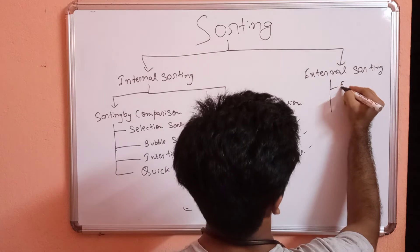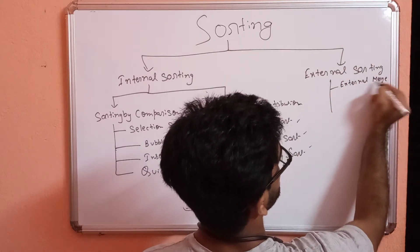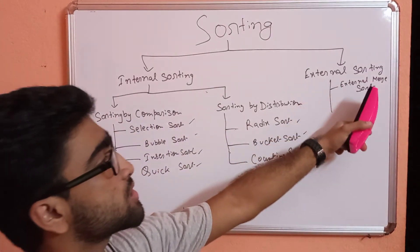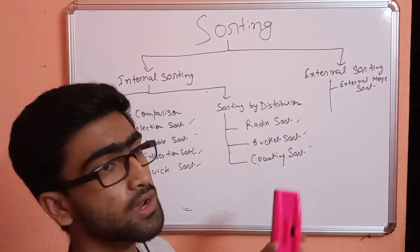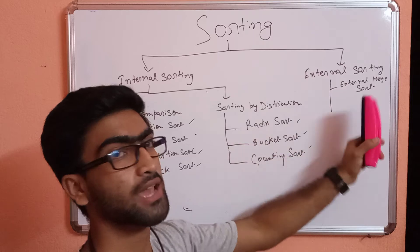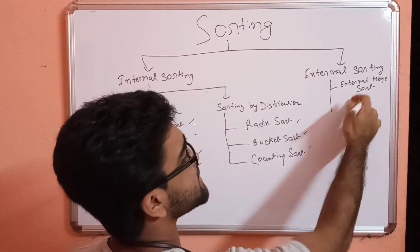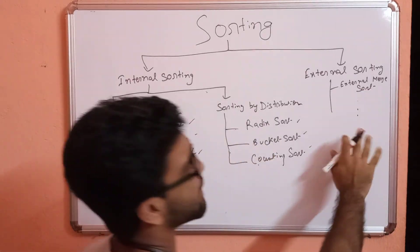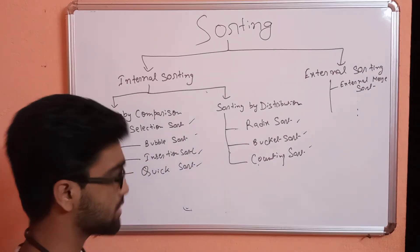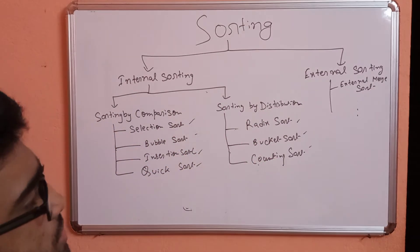For external sorting, one example is external merge sort. External sorting is used when the dataset is very massive and cannot be handled by primary memory. There are many more external sorting techniques which will be discussed later.